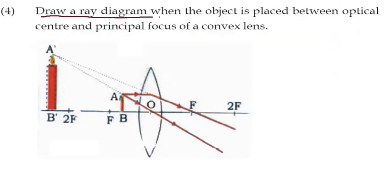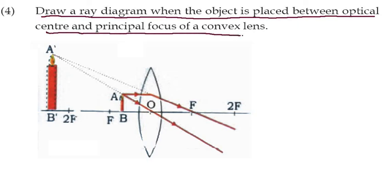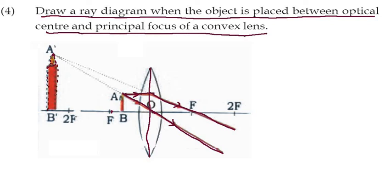Draw a ray diagram when the object is placed between the optical center and the principal focus of a convex lens. The object is placed between the principal focus and the optical center. The image formed is virtual. Take the parallel ray — it goes through the focus after refraction. The ray through the optical center goes straight. These rays do not meet on the other side, so draw dotted lines backward — the virtual image A'B' forms on the same side, beyond 2F of the object.